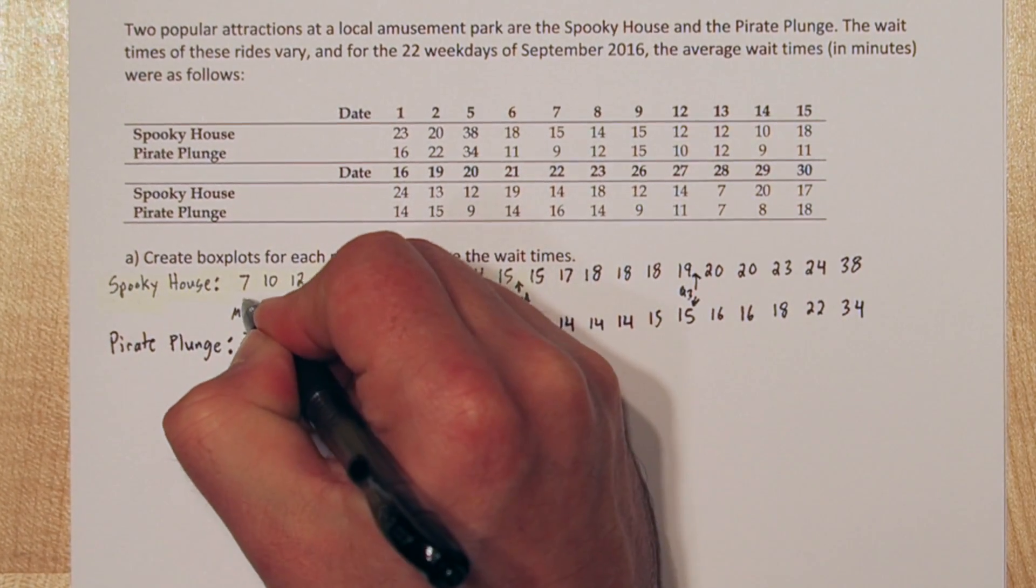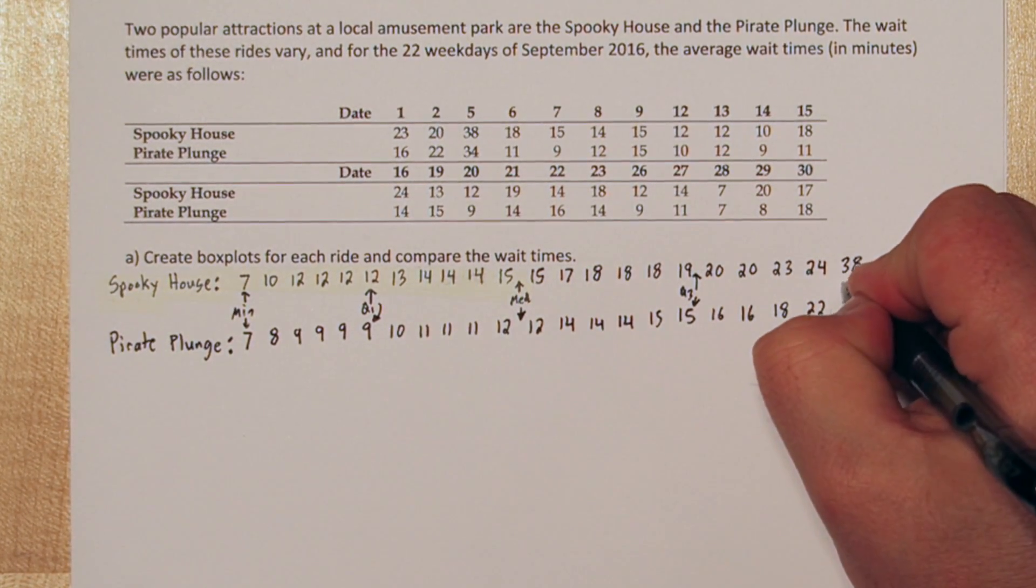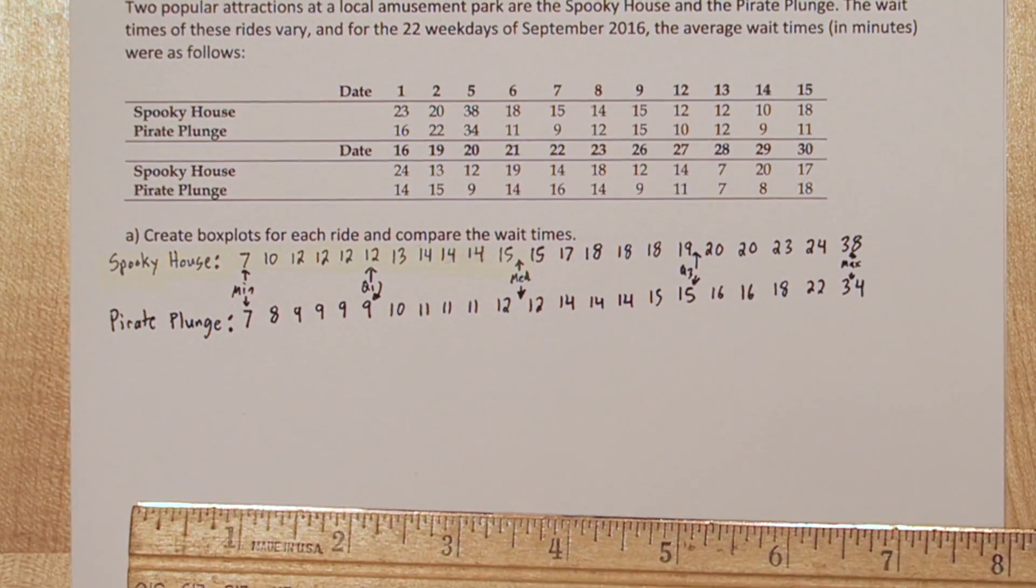The minimum waiting time for both rides is 7 minutes, and the maximum waiting time for spooky house is 38 minutes and 34 minutes for Pirate Plunge. Now let's make our box plot.